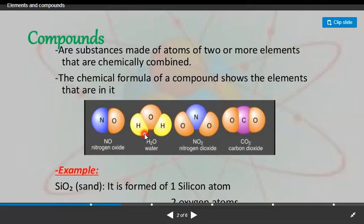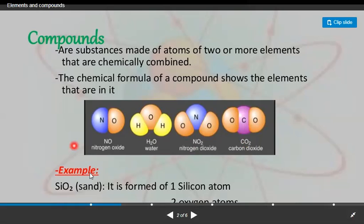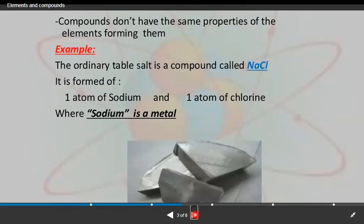This is a water molecule: a separate element of hydrogen, a separate element of oxygen, and another hydrogen element. When these are chemically combined together, they form a water molecule — a water compound. In nitrogen dioxide, we see oxygen, nitrogen, and oxygen elements combined together. In carbon dioxide, we see one carbon atom and two oxygen atoms combined together to form carbon dioxide. Silicon dioxide is an example formed of one silicon atom combined with oxygen.